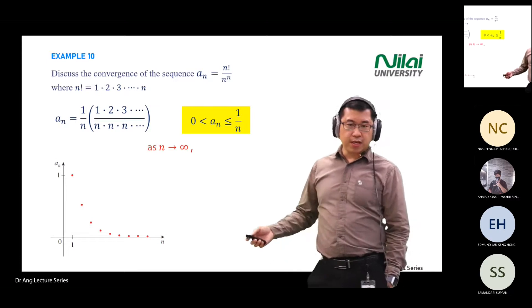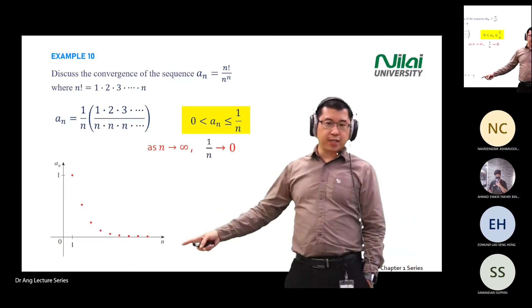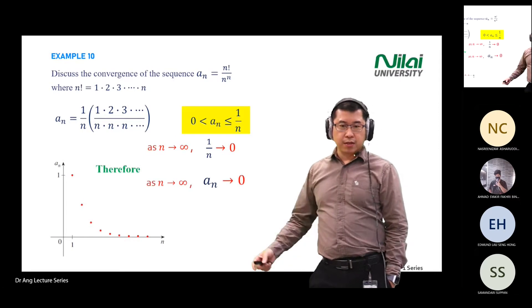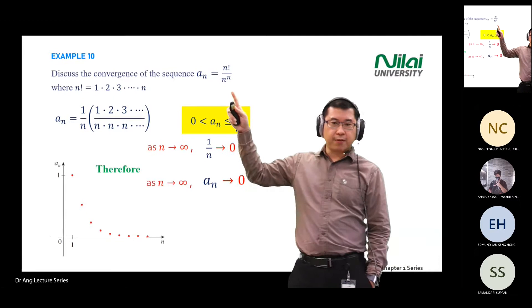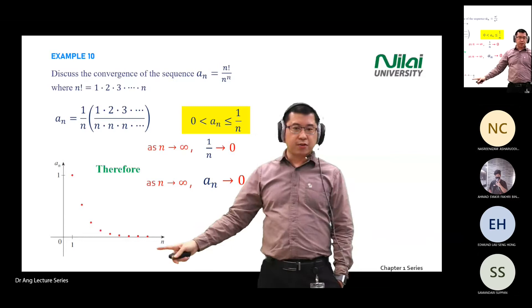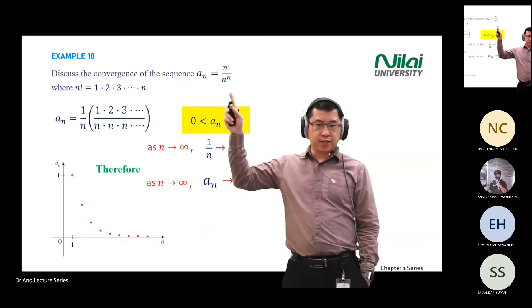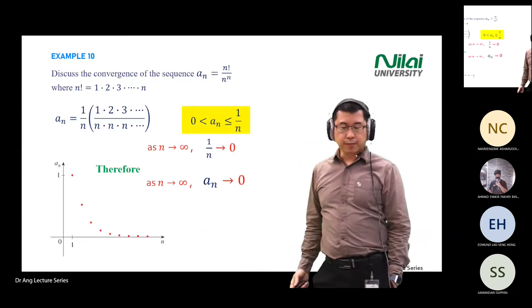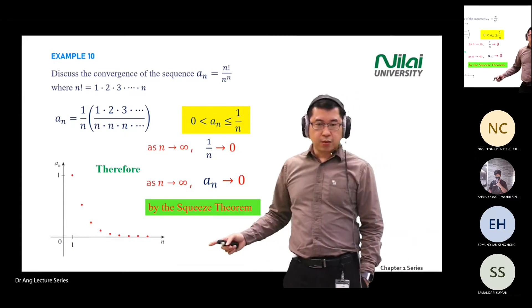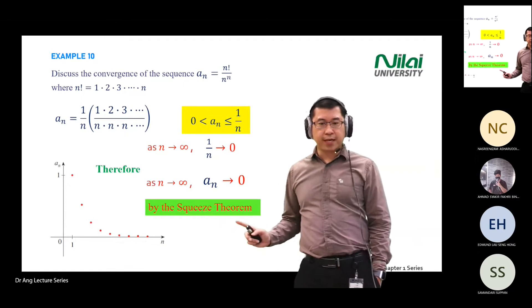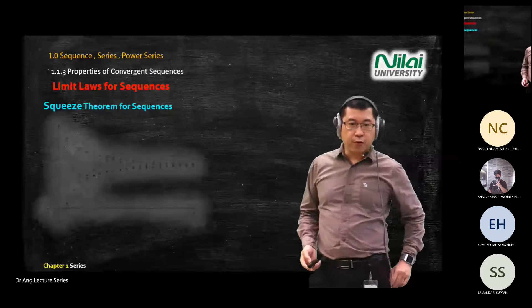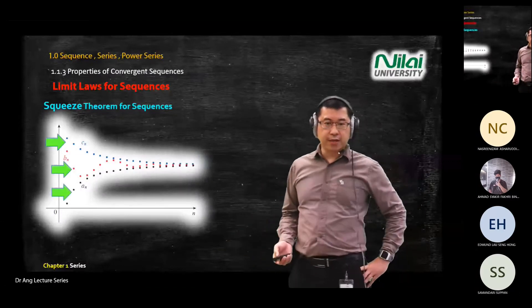If n equals infinity, you know your data will reach zero. So this data is convergent because increasing n to infinity gives you zero — one fixed number. This is also supported by the squeeze theorem.